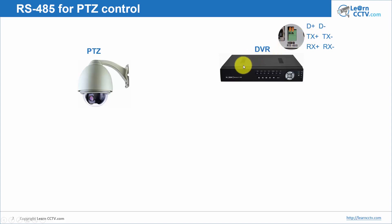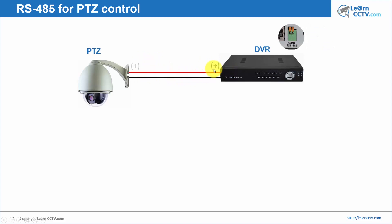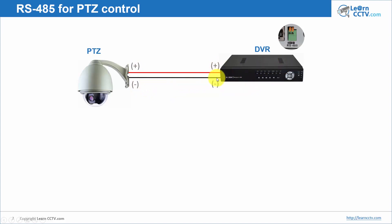Then you need to connect from the DVR to the PTZ. You connect the cable with positive to positive and negative to negative — plus to plus and minus to minus. You just need to look at your camera documentation to make sure which cable you connect to the camera.